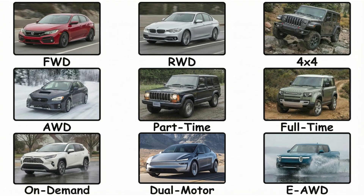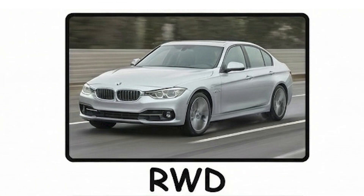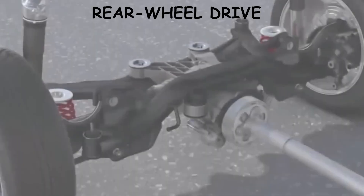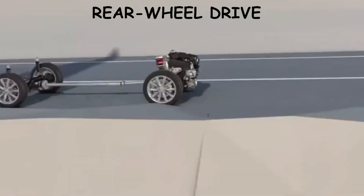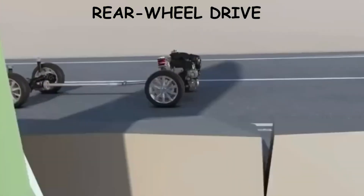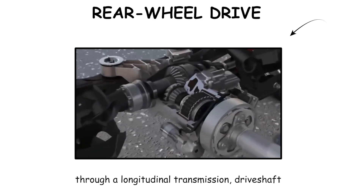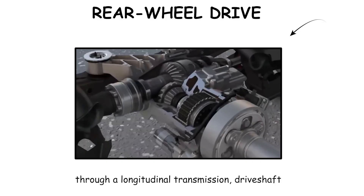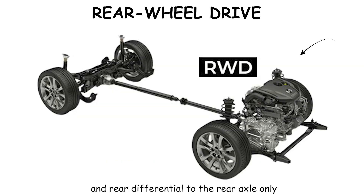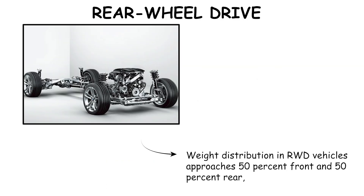Front Wheel Drive dominates modern sedans. Rear Wheel Drive is a drivetrain layout where engine torque, measured in newton meters, is transmitted through a longitudinal transmission, drive shaft, and rear differential to the rear axle only. Weight distribution in rear wheel drive vehicles approaches 50% front and 50% rear, improving yaw balance during cornering.